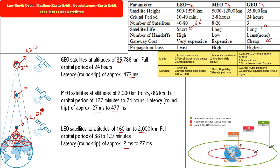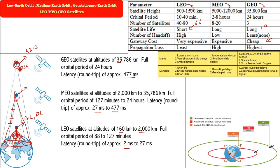Coming to the demerits — LEO has a short lifespan of about five years; due to its low altitude, LEO satellites encounter radiation belts and have a short line of sight, with path loss as well. For MEO, the demerits include higher round trip delays and greater path loss compared to LEO. For GEO, the demerits are larger round trip delays — 477 milliseconds — and expensive equipment is required due to the weak signal.